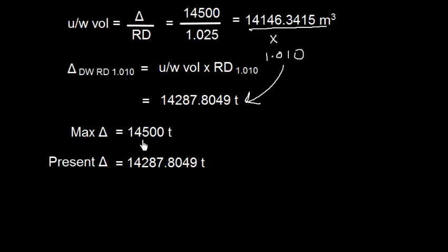Now maximum displacement is 14500 and the present displacement, well vessel is in dock water of RD 1.010, the present displacement is 14287.8049. So we can subtract maximum minus present displacement, that is the weight we can load. Well we can just round it off. So this is the amount of cargo we can load, amount of cargo which can be loaded.